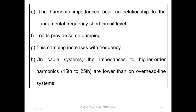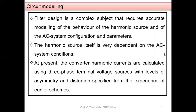On cable systems, the impedances to higher order harmonics (around the 15th to 25th) are lower than for overhead line systems. For underground or submarine cables used over distances of around 30 to 40 kilometres, the impedances to higher order harmonics are lower than overhead lines, meaning the choice of impedance will be higher compared with overhead line HVDC systems.